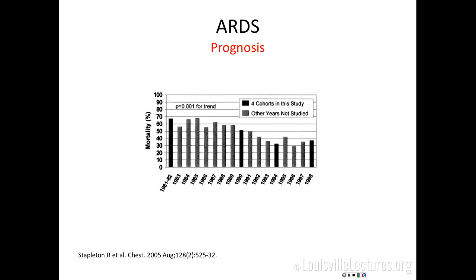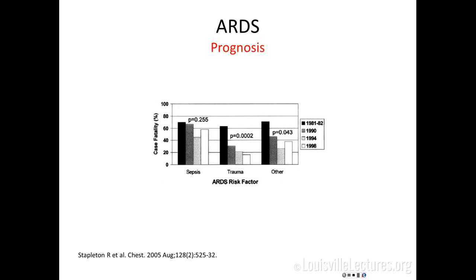The mortality of ARDS appears to have been decreasing over time. One study looking from the early 1980s to the late 1990s found mortality decreased from close to 70% in the early 80s to a little over 40% in the late 90s, and it continues to decrease slowly. ARDS is a heterogeneous condition — for example, in 1998 the mortality of ARDS caused by sepsis was close to 60%, while ARDS caused by trauma was less than 20%.